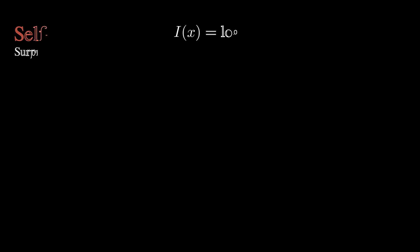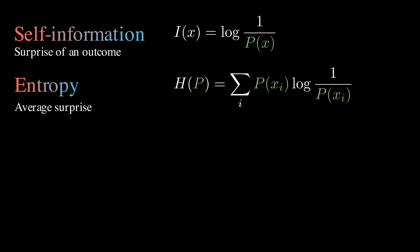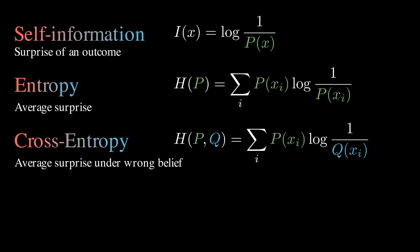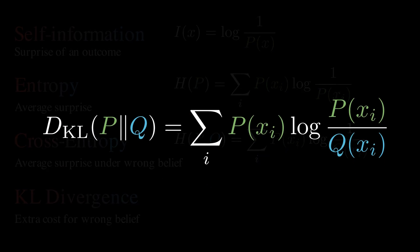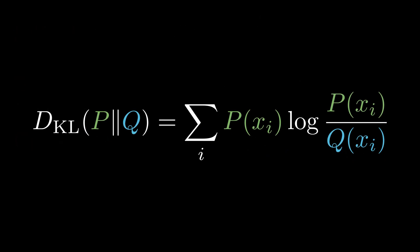A quick recap. Self-information quantifies the surprise of a particular outcome. Rare events are more surprising and carry more information. The entropy measures the average surprise, that is, the expected number of bits needed to encode outcomes using an optimal code. The cross entropy is the average surprise when using a wrong distribution Q instead of P. The KL divergence quantifies how much extra surprise or inefficiency we incurred by using the wrong distribution Q. This tells us how far off the distribution Q is from P.